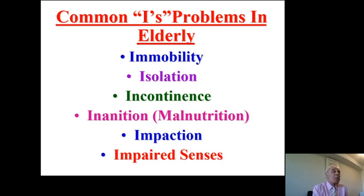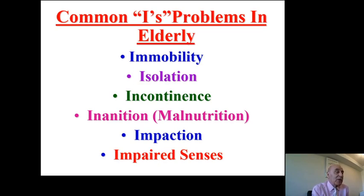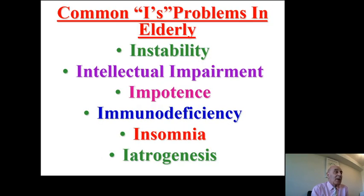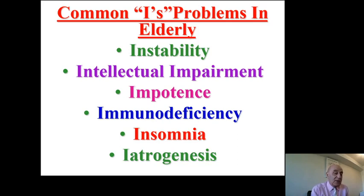Most elderly problems begin with the letter I: immobility, isolation, incontinence, inanition (malnutrition), impaction, impaired senses, instability, intellectual impairment, impotence, immunodeficiency, insomnia, and iatrogenesis.